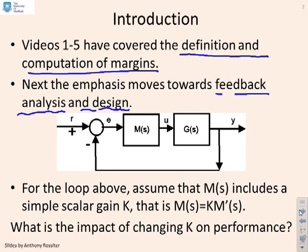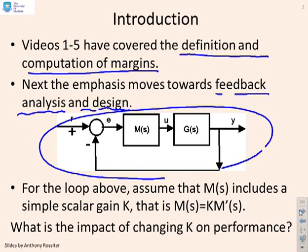We're going to assume our standard simple feedback loop, like this one here with compensator M and a system G, but the subtle difference is we're now going to assume the compensator M is given by some scalar gain K times M dash of S. And we're going to ask ourselves, what happens as we change K? How do the margins change?